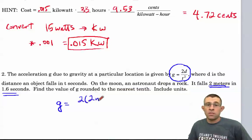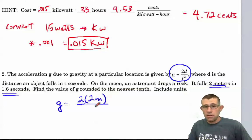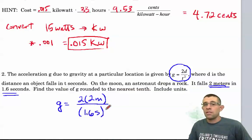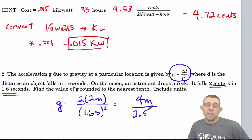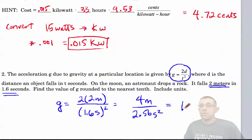So we see g is equal to 2 times 2m in meters divided by 1.6s squared. So, resulting in the numerator of 4 meters divided by 2.56 seconds squared gives us 1.5625, and the unit on that is meters per second squared. Great work today!